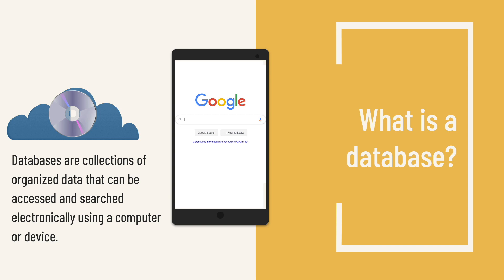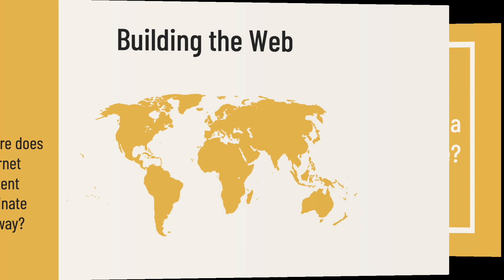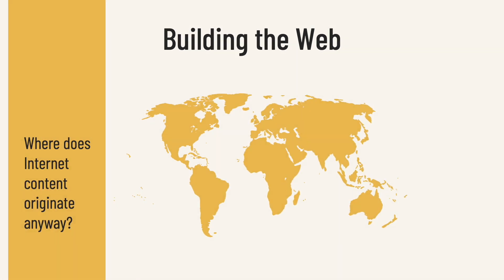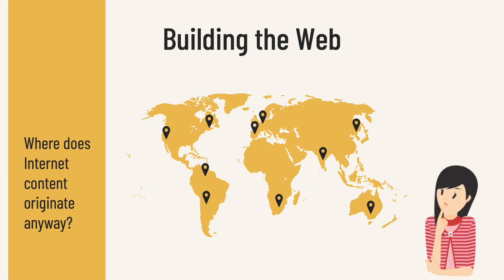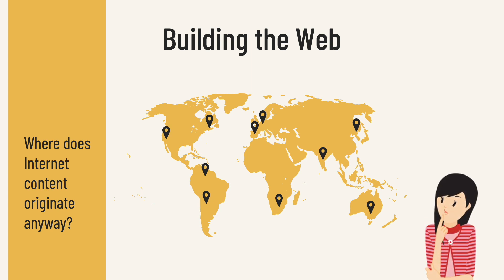One popular database we're all familiar with is Google — a database that organizes websites and allows them to be searched and accessed. These websites are created throughout the world by anyone who has access to a computer and the knowledge to do so. There are even some sites, such as wikis, that allow anyone to edit content. This may leave you wondering which of these sources you can trust to provide credible information for your research.